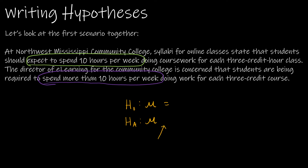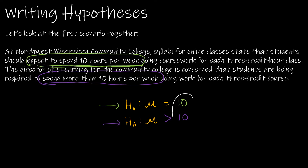The alternative hypothesis is either less than, greater than, or not equal to, depending on the context. We expect students to spend 10 hours per week — so the null is that the mean amount of hours students spend is 10 hours per week. The director of e-learning is concerned students are being required to spend more than 10 hours per week, so we test whether students in fact spend more than 10 hours. H sub zero: mu equals 10. H sub A: mu is greater than 10. These values are always the same in both hypotheses.